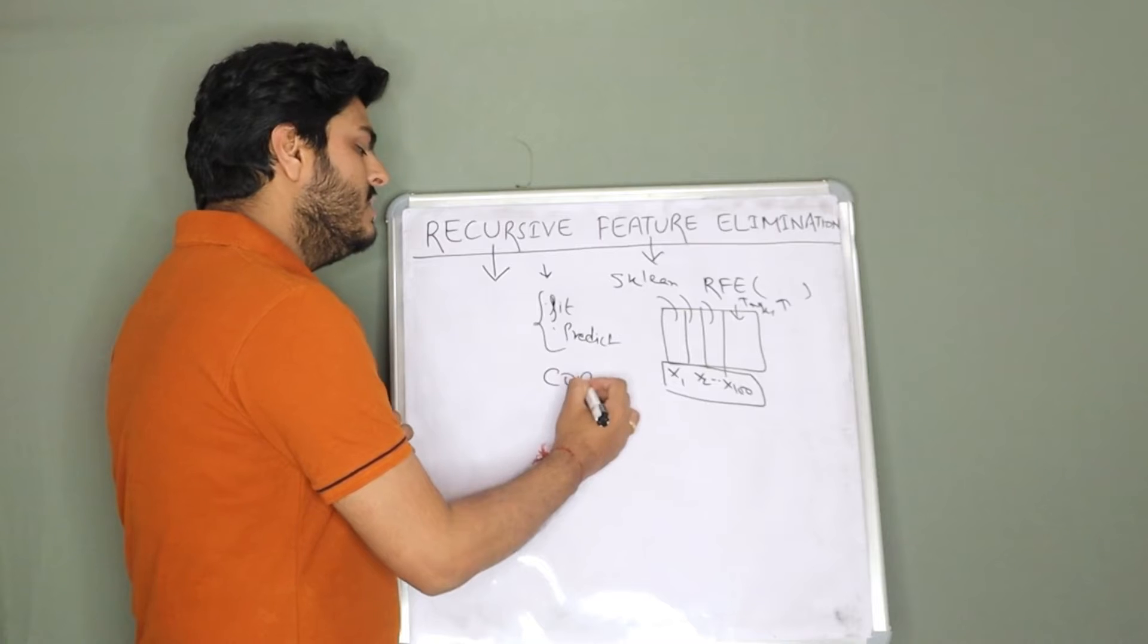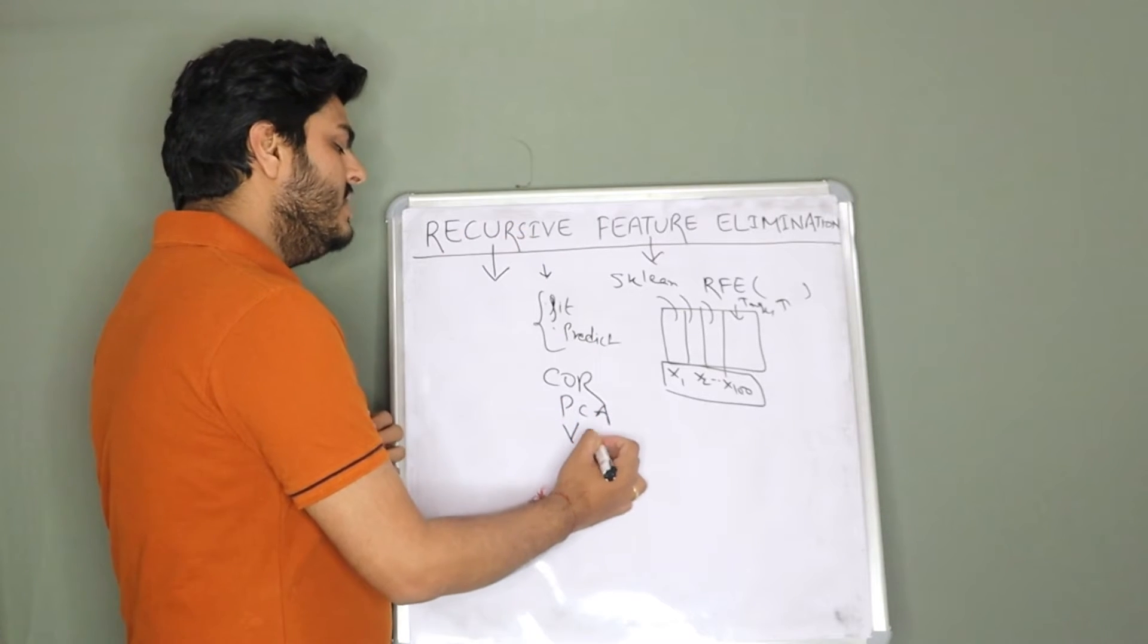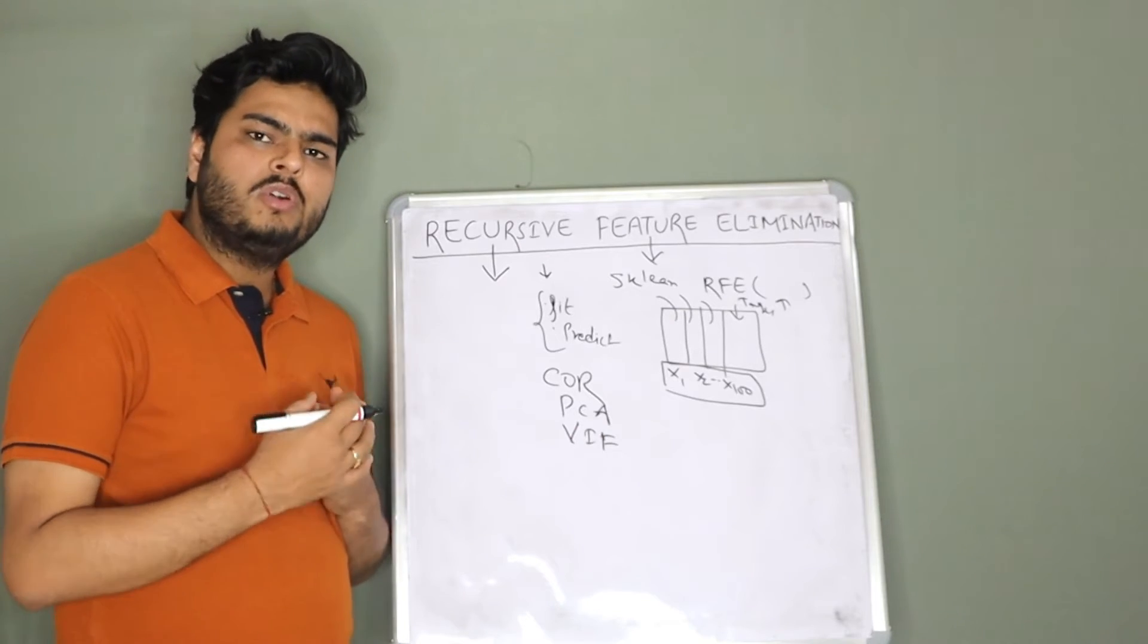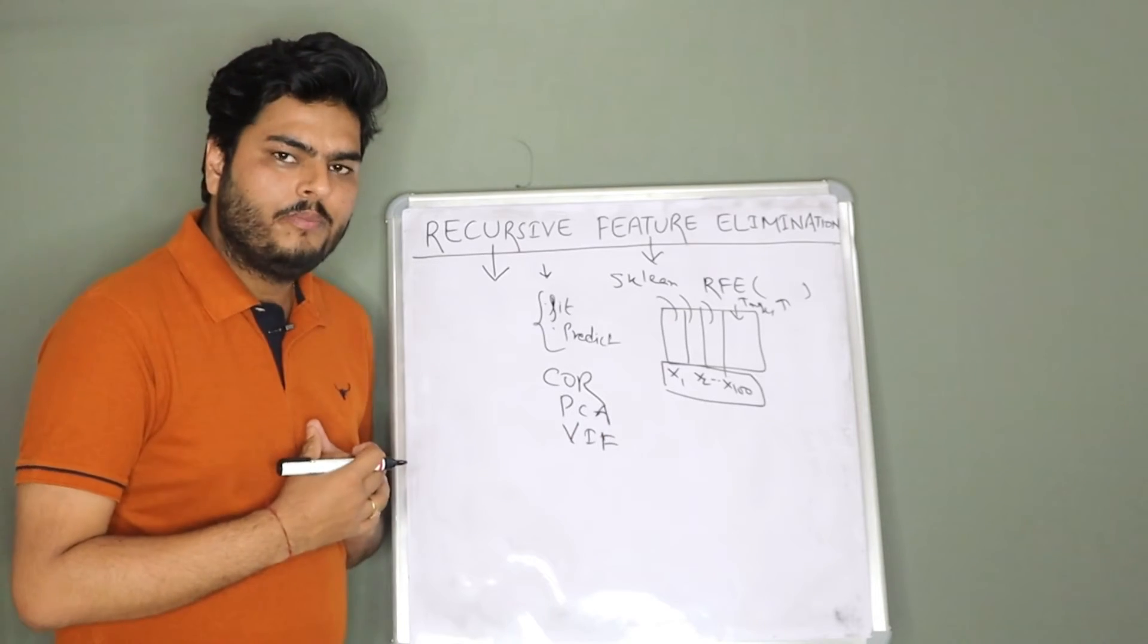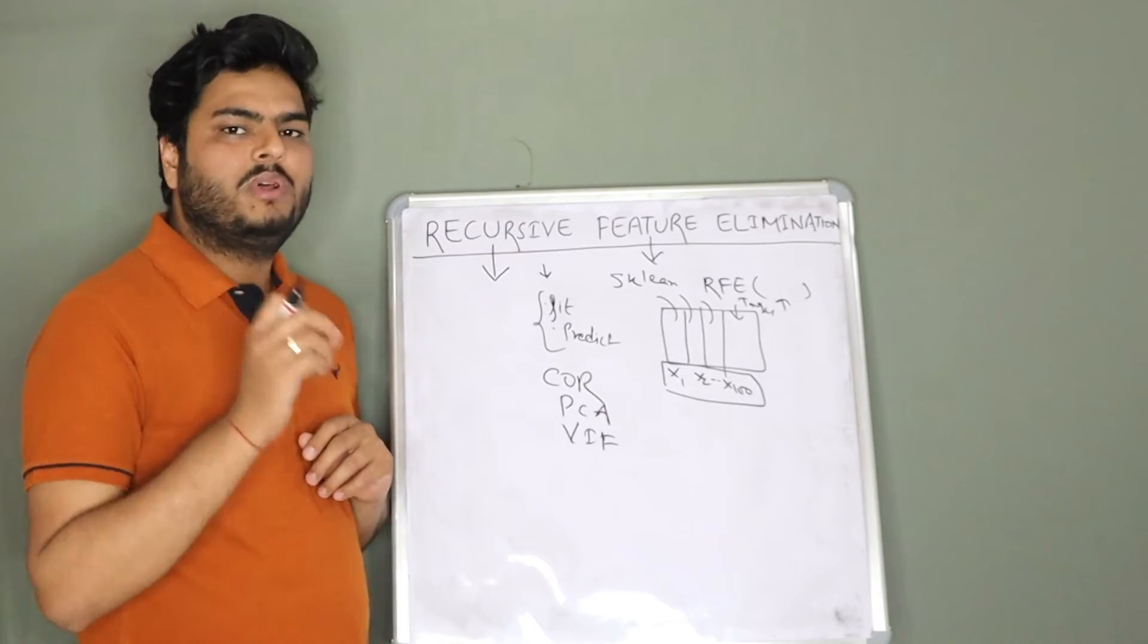For example, correlation matrix. For example, principle component analysis. For example, I was explaining about VIF and these things. All these things are handy when we talk about reducing our features but how RFE is different. I will try to explain you with an example.